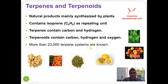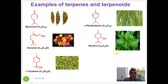More than 23,000 terpenes are known in the literature, and we find various applications of terpenes in our everyday life. The first example is the myrcene molecule, which is an acyclic molecule containing three double bonds and 10 carbon atoms. It is a major constituent of bay leaf, which is used as a spice for making Indian curries.